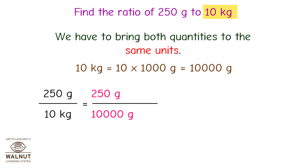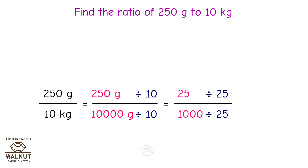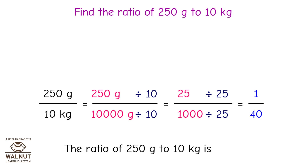We write it as a fraction: 250 grams upon 10,000 grams. We divide the numerator and denominator by 10 and we get 25 upon 1000. Then we divide the numerator and denominator by 25 and we get 1 upon 40. Can we divide the fraction further? Of course not — so that's our final answer. The ratio of 250 grams to 10 kgs is 1 is to 40.